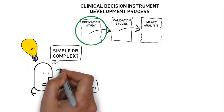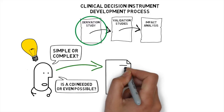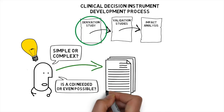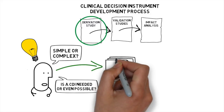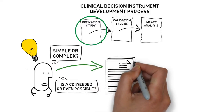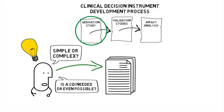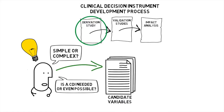The next step in developing a clinical decision instrument is coming up with a long list of what we call candidate variables. These variables may be things on history that you ask, things that you examine on physical exam, or results of laboratory or other investigations. It's important that candidate variables have very good inter-rater reliability, meaning that your finding when you ask a question or do the physical exam is going to be similar to when I do it. The more candidate variables you have, the larger the population you'll need to examine to figure out which ones are actually important.